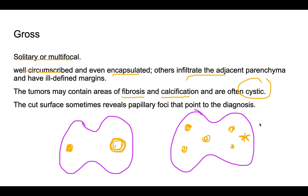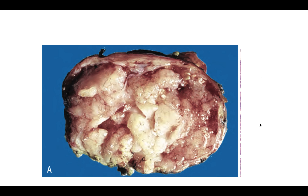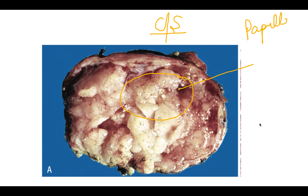On the cut surface of the papillary carcinoma thyroid, the surface is not regular. You can see papillary excrescences — these are papillary projections making the surface uneven — if you look closely, there are papillary projections present on the cut surface.